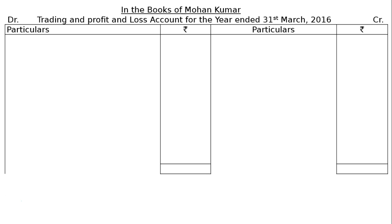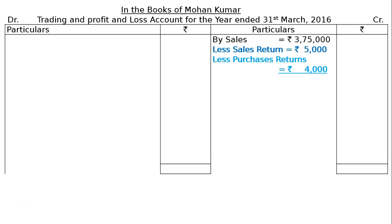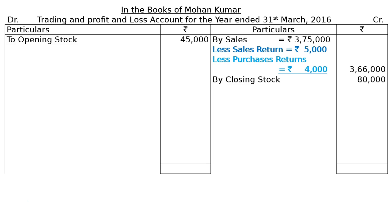On the credit side: By Sales rupees 3,75,000. Less sales returns rupees 5,000 — this is deducted in the debit column. Also, less purchases returns rupees 4,000. Per the additional information, purchases include sales returns of rupees 5,000 and sales include purchase returns of rupees 4,000. Since purchase returns were by mistake added to sales, we deduct this, showing rupees 3,66,000 in the final column.